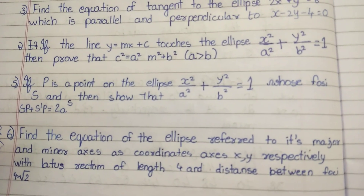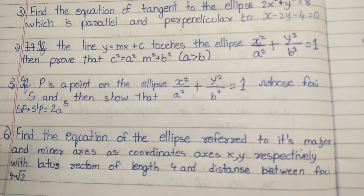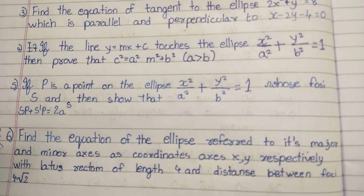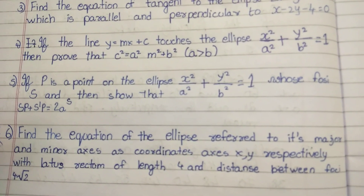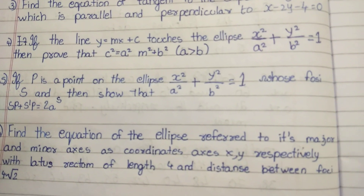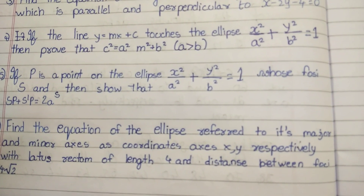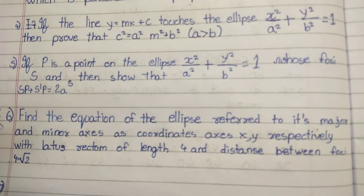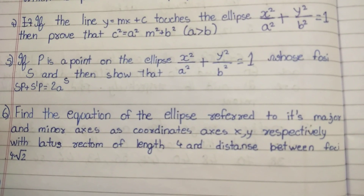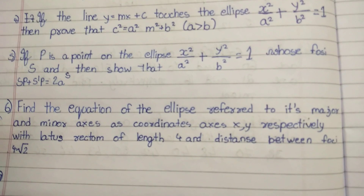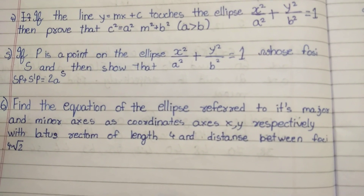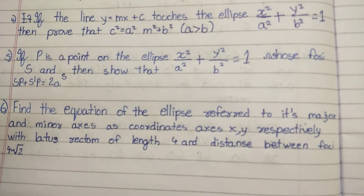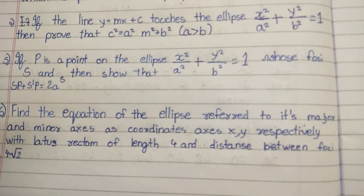Find the equation of the ellipse referred to its major and minor axes as coordinate axes x and y respectively, with the latus rectum of length 4 and distance between foci equal to 4√2.